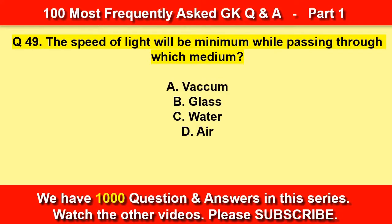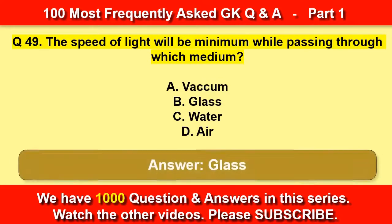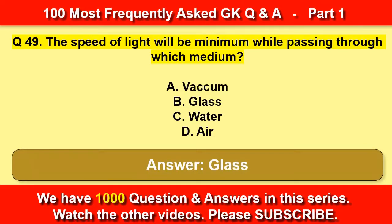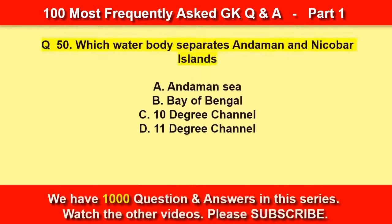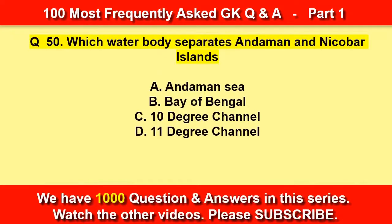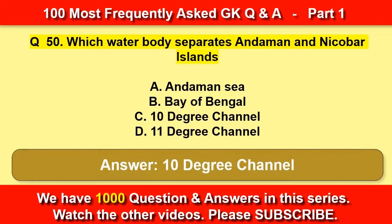The speed of light will be minimum while passing through which medium? Glass. Which water body separates Andaman and Nicobar Islands? The 10 Degree Channel.